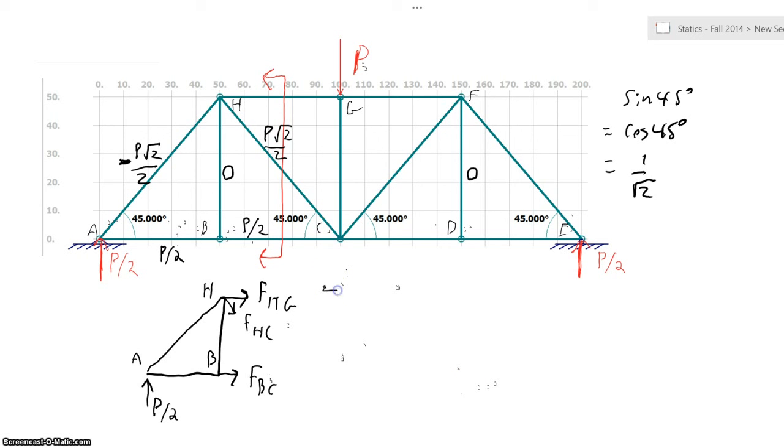The last number that we need to solve for, we can use the sum of the forces in the X direction. We have FHG is equal to FHG plus FHC times cosine of 45 or over root 2 plus FBC. FHG is equal to zero. Plugging in the numbers we know, we have FHG plus P over 2 plus P over 2 is equal to zero, where FHG is equal to negative P. That negative again tells us that this member on the top, HG, is going to be in compression, and the force in it is going to be equal to the load on our member.